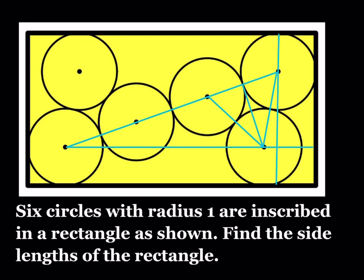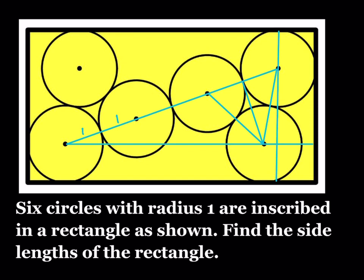This problem was taken from a book on Sangaku problems, but I modified it a little bit. The radius of each circle is one — this is one, this is one, this is one, this is one, this is also one, and this is also one. Notice that we do have an equilateral triangle whose side length is two. Since the height is perpendicular to the base, its length from the 30-60-90 triangle is going to be square root of three.